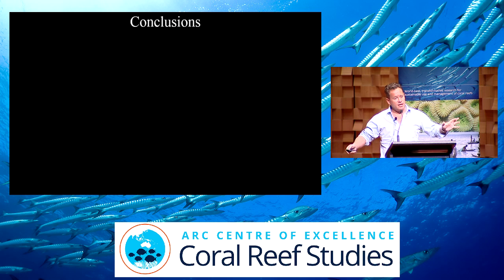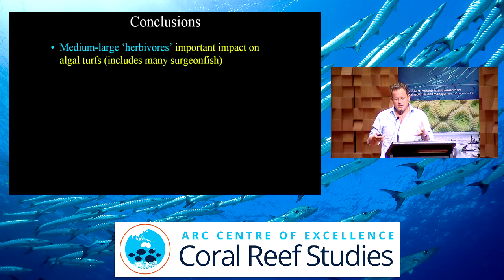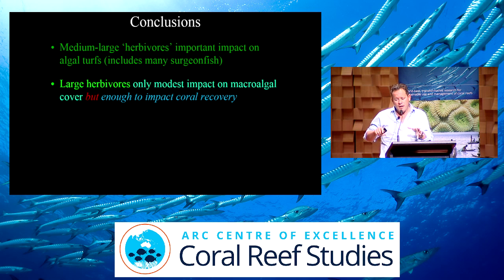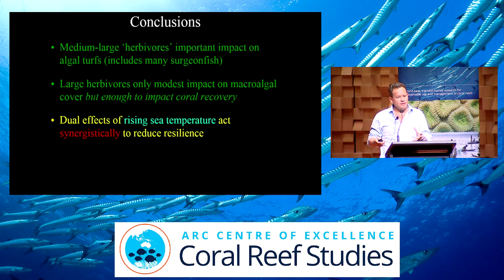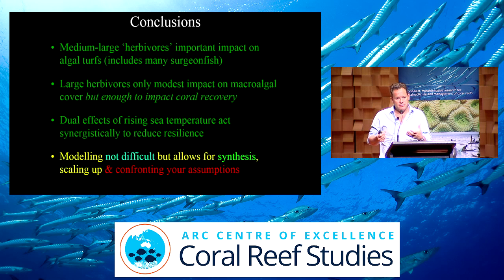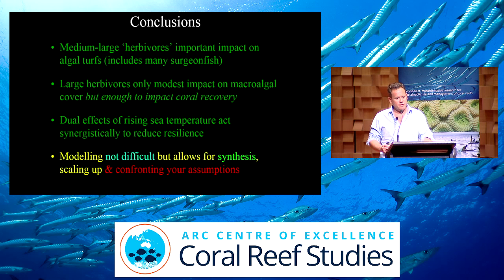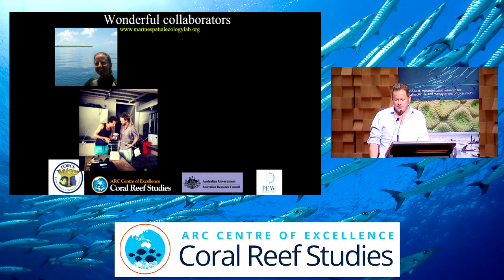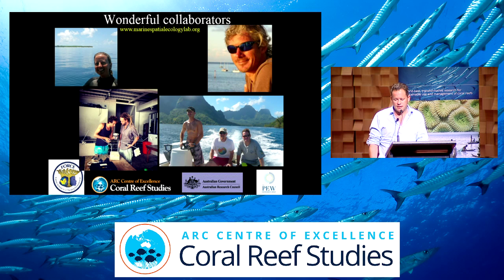So, from these diverse examples, the conclusions are: medium to large herbivores have a very important impact on algal turfs, including many surgeonfish. Large herbivores may only have a modest impact on macroalgae in Marea, but it seems to be enough to have a strong impact on coral recovery. The dual effects of rising sea temperature act synergistically to reduce resilience. These examples hopefully convince one or two people that adding modeling to your work can help you test your ideas, focus on priority questions, and help resolve complex outcomes of your experiments. Thanks to Chris Doropoulos, Jez Roth, Alyssa Marshall, Mehdi Ajarad, Bob Stenek, and Yves-Marie Bozek for the modeling.